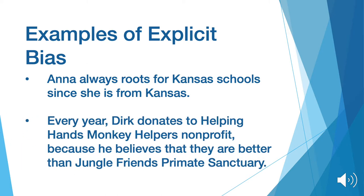Another example would be how every year Dirk donates to Helping Hands Monkey Helpers nonprofit because he believes they are better than Jungle Friends Primate Sanctuary. This is an example of explicit bias because it shows that Dirk is aware that he favors one nonprofit over the other.